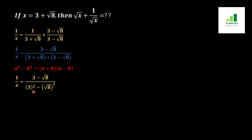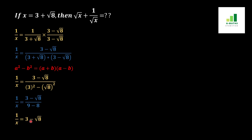We apply 3 squared minus under root 8 squared in the denominator, giving us 9 minus 8 which equals 1. The square and the root cancel out, and we get 1 over x is equal to 3 minus under root 8.